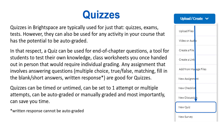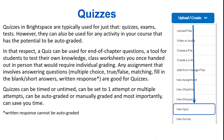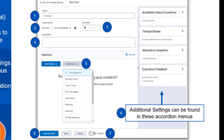Quizzes can be timed or untimed, can be set to one attempt or multiple attempts, can be auto-graded or manually graded, and most importantly, can save you time. To create a quiz, start by navigating to the module where you want to add the quiz. Click Upload Create and select New Quiz from the drop-down menu. You'll notice the interface is relatively consistent with the Assignment and Discussion tool. Start by giving your quiz a name, such as Chapter 1 Quiz.